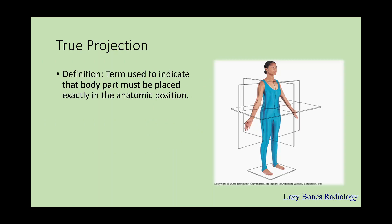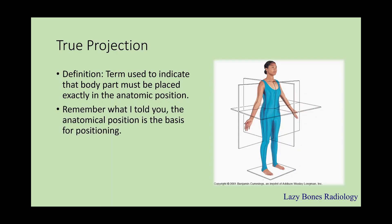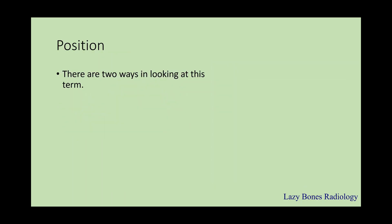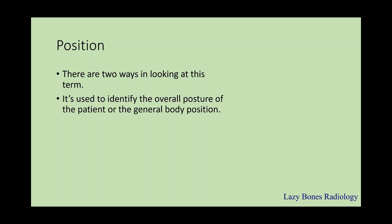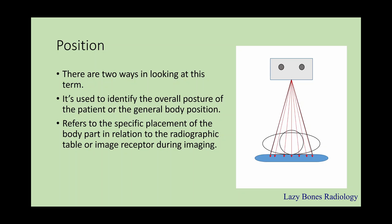True projection. This term is used to indicate the body part must be placed exactly in the anatomical position or the true projection. Remember, the anatomical position is very important. Next, position. There are two ways of looking at this term. It is used to identify the overall posture of the patient or the general body position. It also refers to the specific placement of the body part in relation to the radiographic table or the image receptor during imaging.